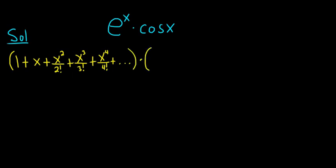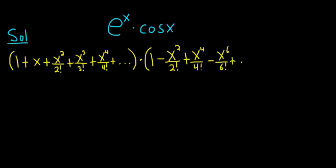Now we multiply by the Maclaurin series for cosine. Cosine is an even function, so it only has even powers of x in its Maclaurin series. The first even power of x is x to the 0, which is 1, and then it alternates. So it's minus x squared over 2 factorial, plus x to the 4 over 4 factorial, minus x to the 6 over 6 factorial, and then plus dot dot dot.